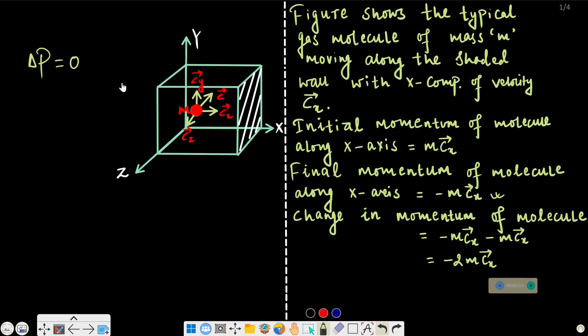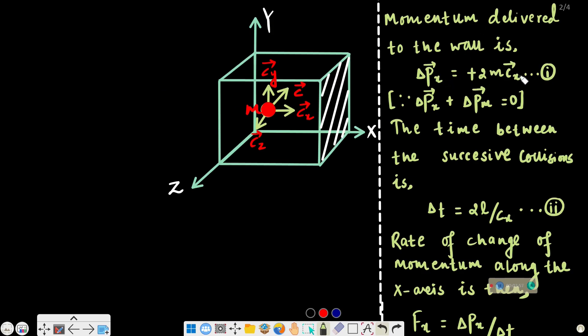Change in momentum of molecule plus change in momentum of wall should be equal to zero. So if the change in momentum of the molecule is minus 2mcx, then the momentum delivered to the wall is del pw equals plus 2mcx.